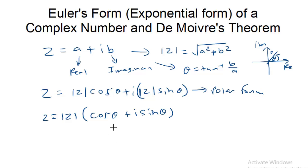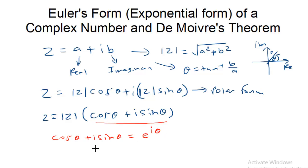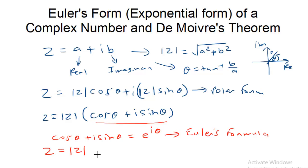This polar form can be represented as e raised to the power iθ. This is known as Euler's form. So the same complex number can be represented as its modulus value multiplied by e raised to the power iθ — that is, Z = |Z| e^(iθ). This is known as Euler's form of a complex number.